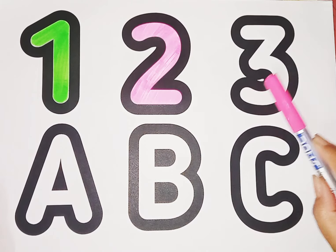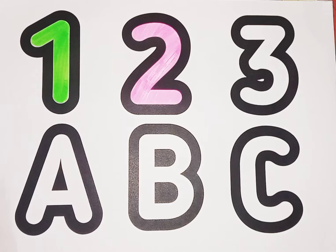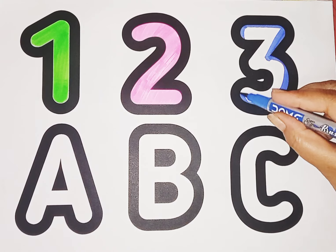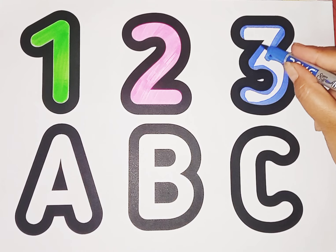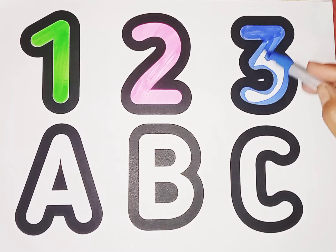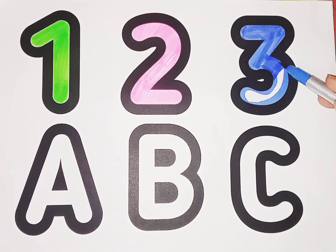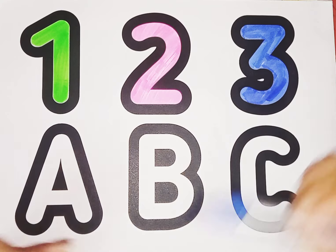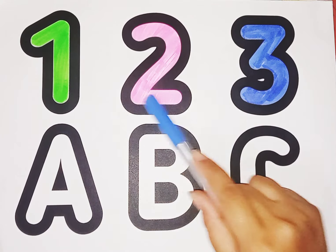Next is number 3. Blue color, number 3. T, H, R, double E, 3. T, H, R, double E, 3. This is number 3. 1, 2, 3.